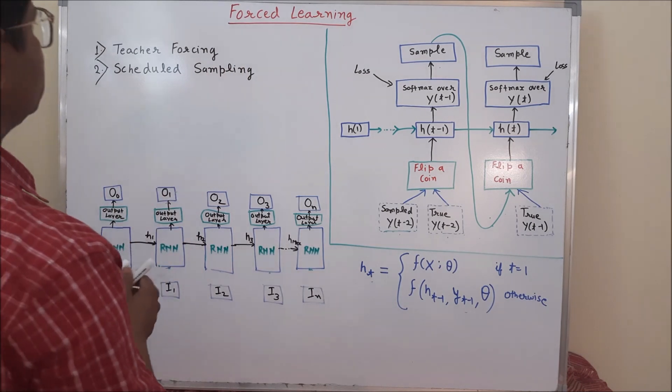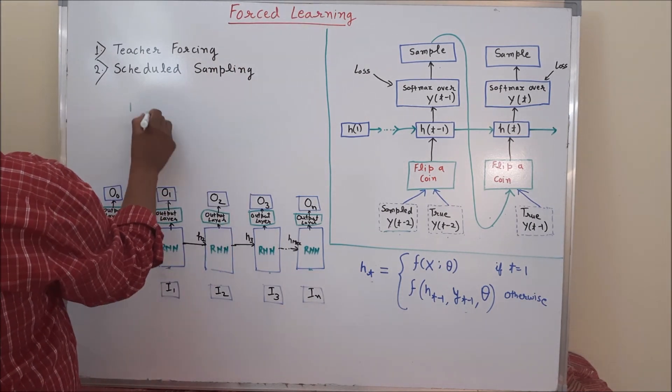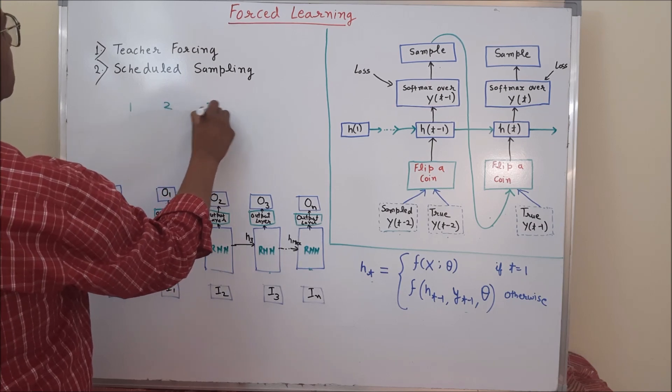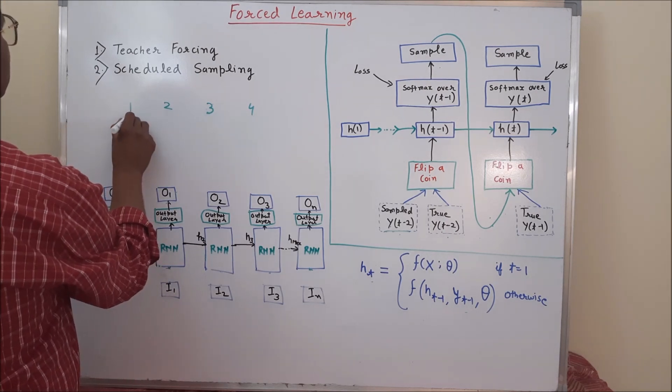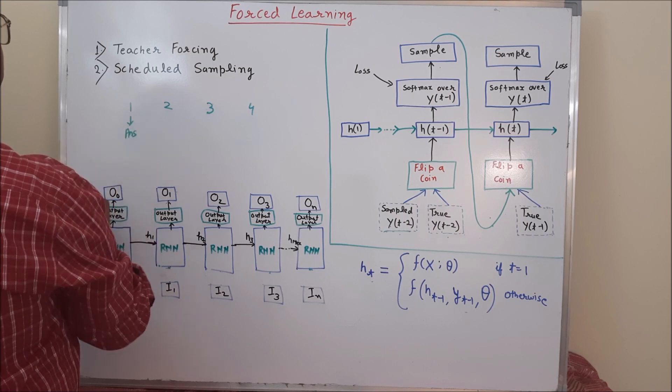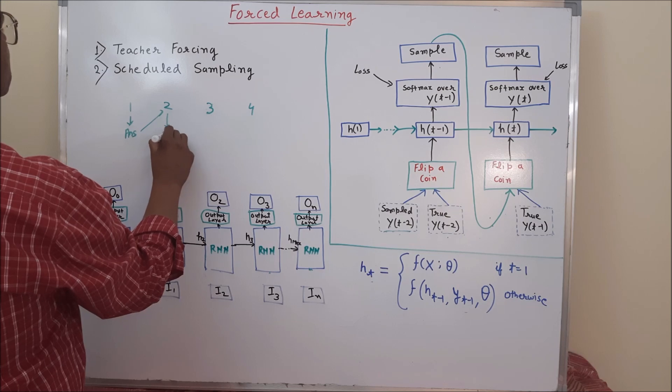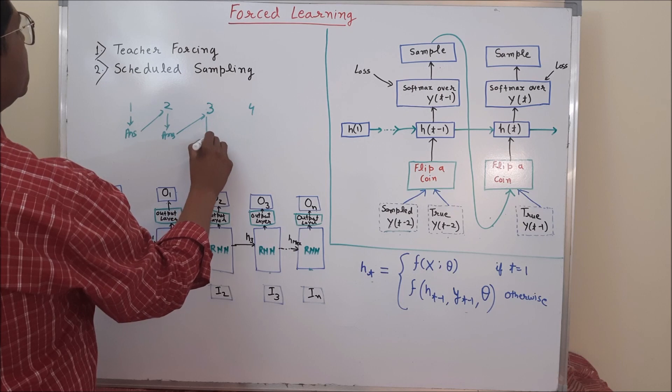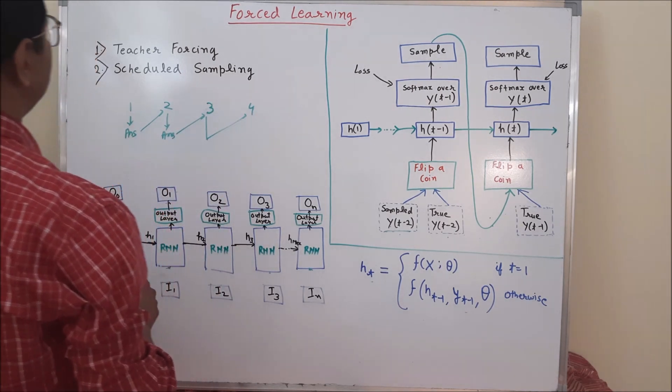What is forced learning in deep learning? It will be clear through a simple example. Suppose you have four multiple-choice questions. And the condition is, the answer of question 1 will be used to answer question number 2. And answer of question number 2 will be used to answer question number 3. And similarly, it will propagate.